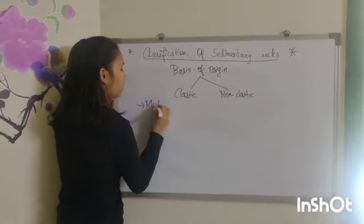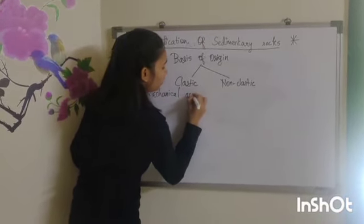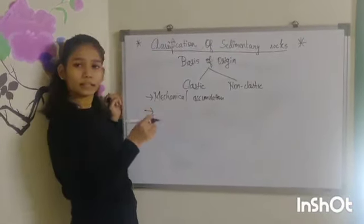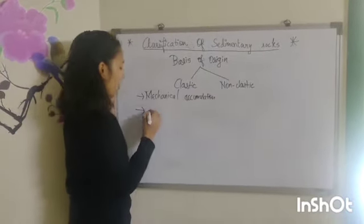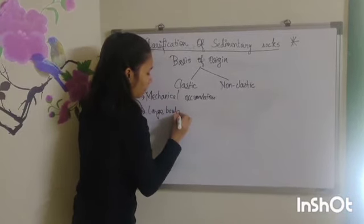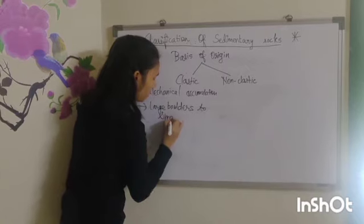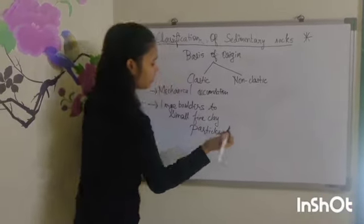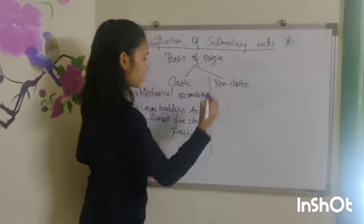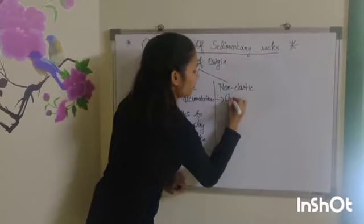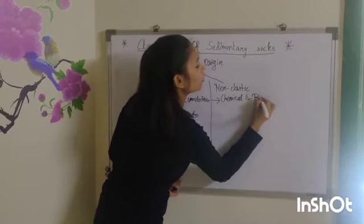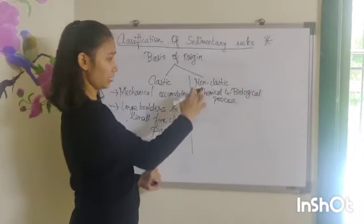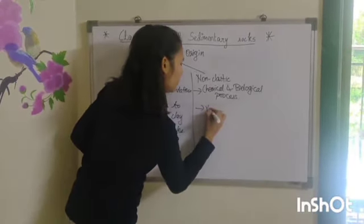Clastic sedimentary rocks are formed due to mechanical accumulation of sediments. The particle size in clastic sedimentary rocks ranges from large boulders to small fine clay particles. Non-clastic sedimentary rocks are formed due to chemical and biological processes, and the size of sediments included in non-clastic rocks is very fine grain.